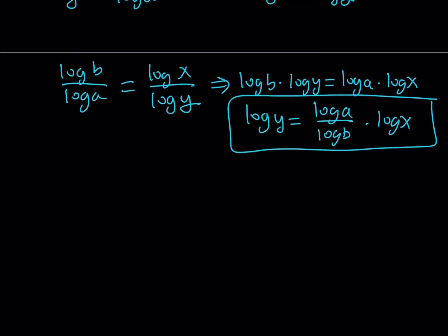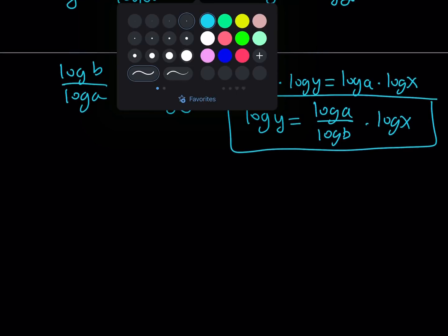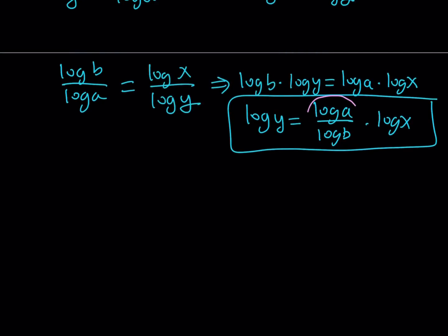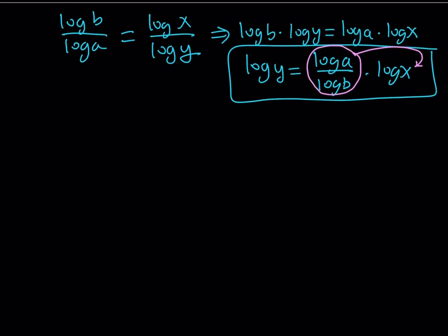10 to the power of both sides. There's also an alternative. You can also do the following. Use this as a coefficient here and make it an exponent. Like this. And that way you're going to be able to write y in terms of x. But I'm just going to use a slightly different approach and do 10 to the power of both sides. So that gives me 10 to the power log y is equal to 10 to the power of this. And that can be written as a product, so I can write it as 10 to the power log x to the power because the exponents are multiplied here.